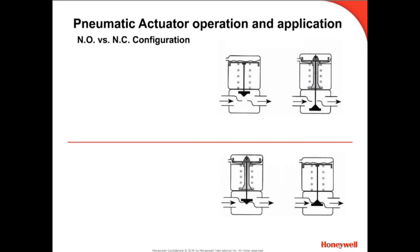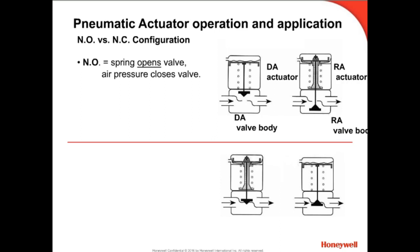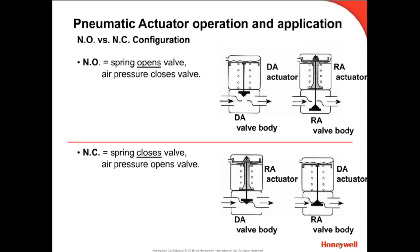When an actuator is combined with a valve body, the resultant spring force acting upon the valve stem will now make the valve either normally open or normally closed. In either combination — a DA actuator with a DA valve, or a RA actuator with an RA valve — the spring force will open the valve when no air pressure is present; thus, both assemblies are normally open. In either combination of DA and RA or RA and DA, the spring force will close the valve when no air pressure is present; thus, both assemblies are normally closed.